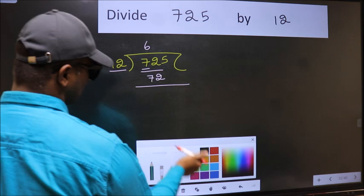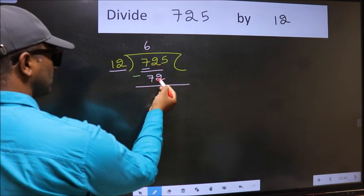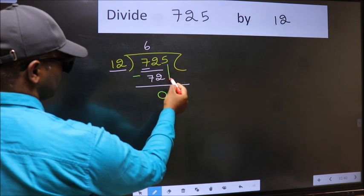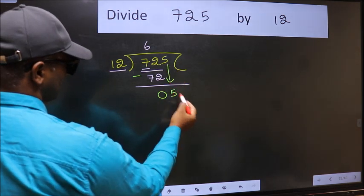Now we should subtract. 72 minus 72 is 0. After this, bring down the beside number. So 5 down.